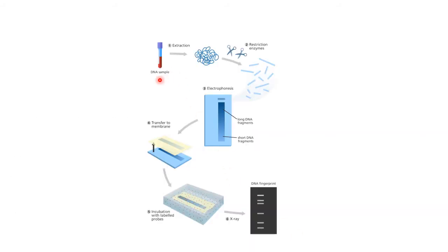This picture shows the process of DNA fingerprinting. We acquire the sample, then we extract the DNA, then we use restriction enzymes to cut the DNA into fragments, then we do electrophoresis to obtain bands, this is then transferred to a membrane, then we incubate with labelled probes, then we expose it to X-ray to acquire the DNA fingerprint.